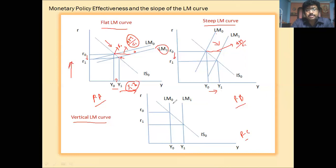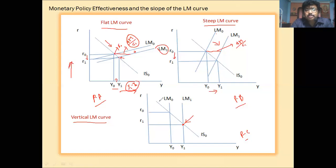In panel C, the LM curve is vertical, meaning the demand for money is completely inelastic to the rate of interest — money demand is not sensitive to the rate of interest at all. The speculative demand for money plays no role in restoring the equilibrium point. If money demand is not sensitive to the interest rate, the entire increase in money supply is used for transaction purposes.